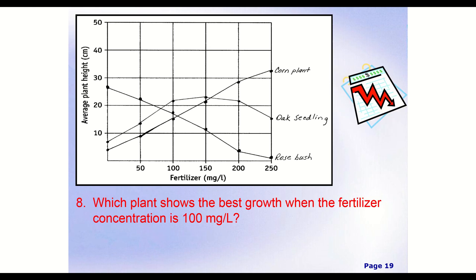Question number eight. So which plant shows the best growth when the fertilizer concentration is 100 milligrams per liter, I'm sorry. So we just got to look at one specific point here. So if we just look at our 100, that's the only piece we need to look at. So we just need to look up this line. That's all we need to be looking at. And if we do, well, we see we have one point here. Let's draw that a little better. We have one point right here. We have one point right here. And we have one point right here.